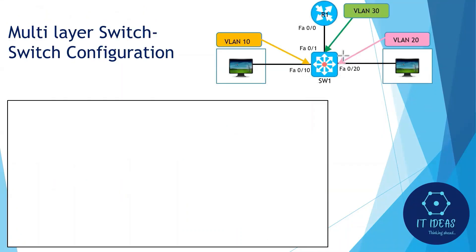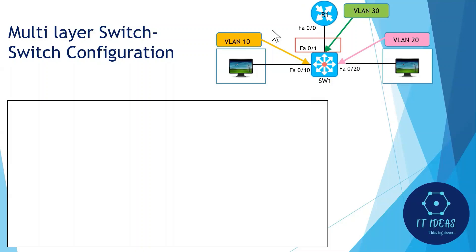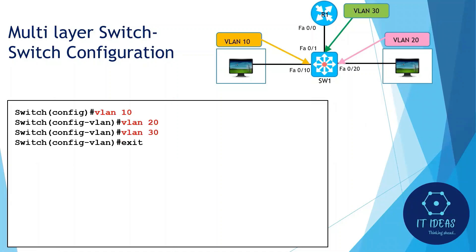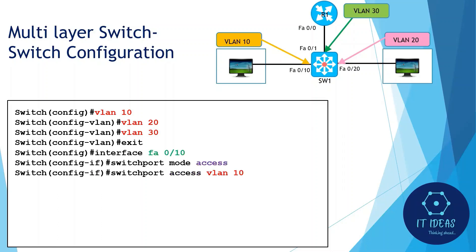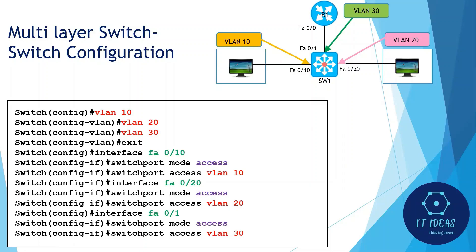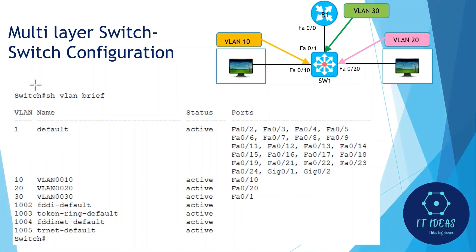Now let's see how to configure this. In this topology, in addition to the layer 3 switch, one router is added so that local networks can reach WAN and external networks. The switch uses VLAN 30 for the link to router R1. Since the layer 3 switch itself can perform inter-VLAN routing, the switch port connecting to the router is configured as an access port. In the switch CLI, go to global configuration mode and create VLAN 10, VLAN 20, and VLAN 30. Assign VLAN 10 to interface F0/10, VLAN 20 to interface F0/20, and VLAN 30 to interface F0/1 which connects to the router. The output of 'show vlan brief' confirms VLANs 10, 20, and 30 are created and assigned to their respective interfaces.